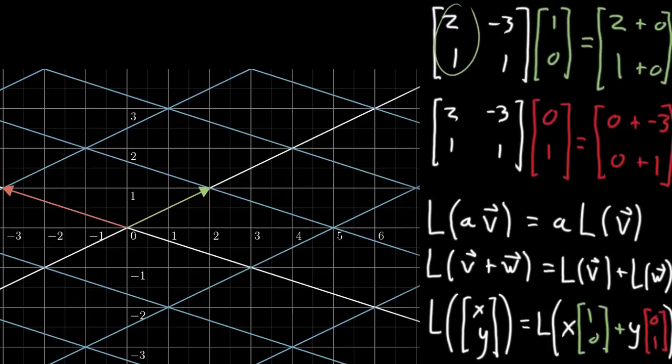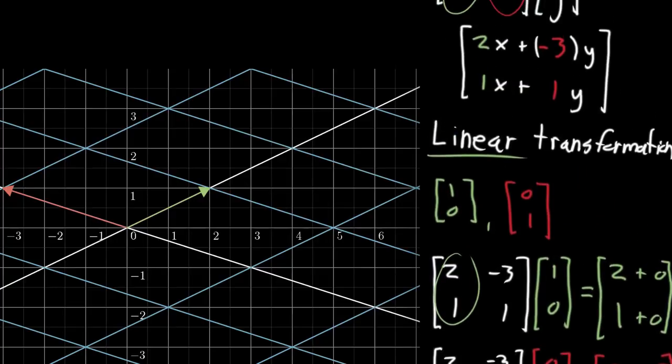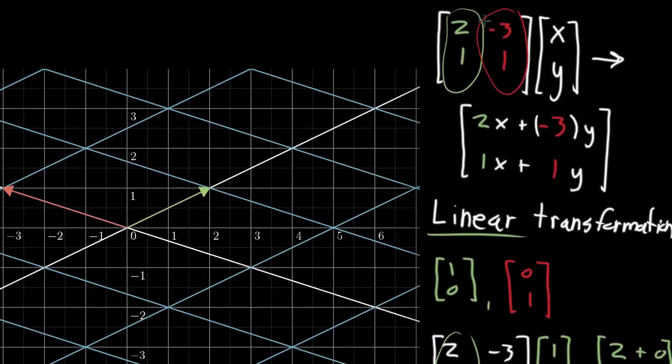So that's all just a little overview. And the upshot, the main thing I want you to remember from all of this, is when you have some kind of matrix, you can think of it as a transformation of space that keeps grid lines parallel and evenly spaced. And that's a very special kind of transformation. That is a very restrictive property to have on a function from 2D points to other 2D points.